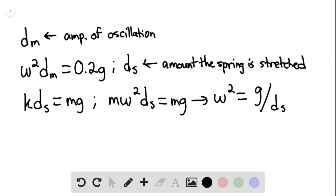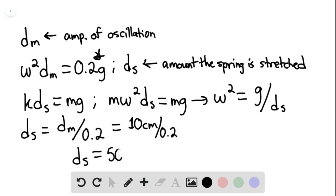Plugging this into our first condition here, we find that the amount that the spring is stretched would be equal to the amplitude of the oscillation divided by 0.2, and so this would be equal to 10 centimeters divided by 0.2, and so the amount that the spring is stretched is going to be equal to 50 centimeters.